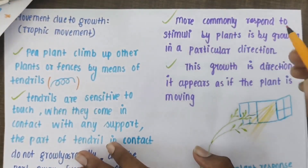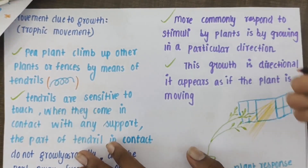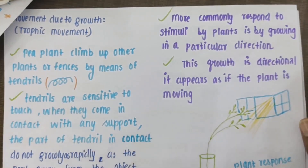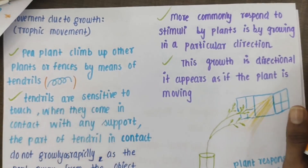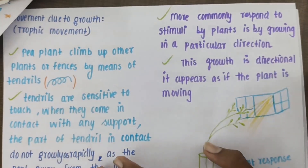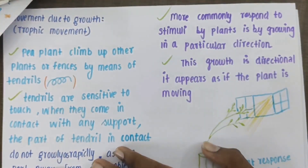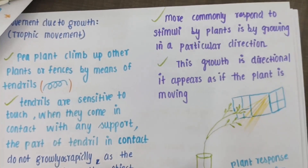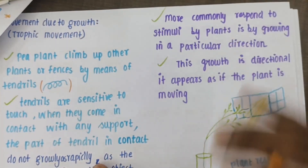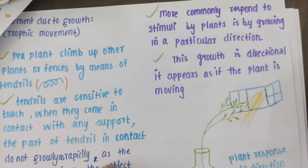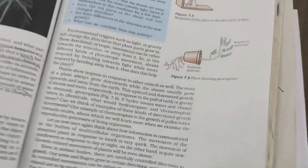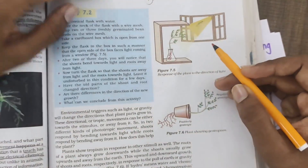More commonly, plants respond to external stimuli by growing in a particular direction. The growth is directional, and it appears as if the plant is moving. The plant can move towards or away from the stimuli. There is an activity given in your book — you are going to fill a conical flask with water and fill a wire mesh at the neck.